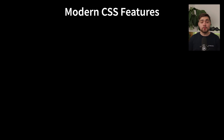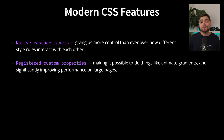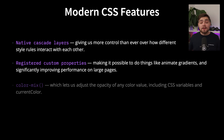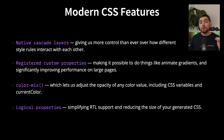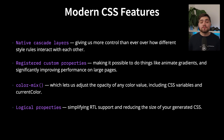Let's talk about some modern CSS features now coming to Tailwind. They've got native cascade layers and registered custom properties, which will make it possible to animate things like gradients and also improves performance on large pages. They've got color-mix, which lets you adjust the opacity of any color value including CSS variables and current color. And they've also got logical properties, which simplifies right-to-left support and reduces the size of your generated CSS.